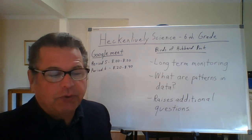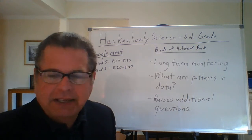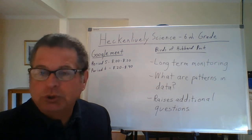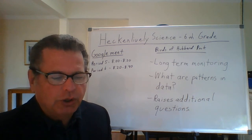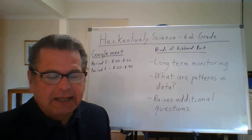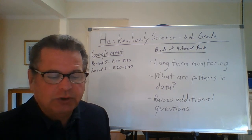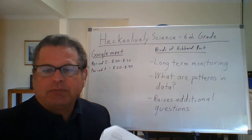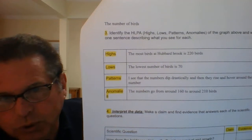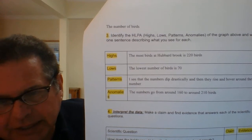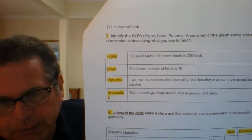Then you're looking for the high and low points and abnormalities. Highs might be something like: the most birds at Hubbard Brook was 220 birds. The low, the lowest number of birds, is 70. For patterns, I see that the numbers dip drastically and then rise and hover around the same number. And for an anomaly, the numbers go from around 160 to 210 birds. This is some student work — if you want to freeze that and take a look at it, that would be fine.